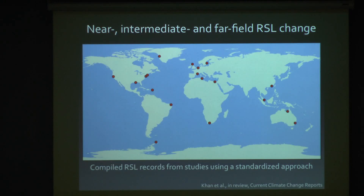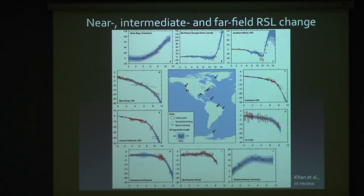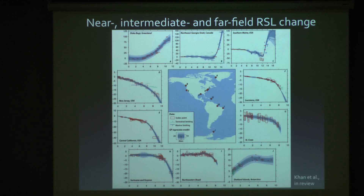We can then start to apply this standardized approach and these advancements in sea level reconstructions to global data sets. We can compare these sites because we're using a standardized approach. This comes from a review paper that I worked on earlier this summer to compile a global data set of sea level records using a similar approach. I'm going to show a subset of these sea level records from Greenland, North and South America, down to Antarctica — Greenland in A, the Northwest Georgia Strait in Canada in B, Southern Maine, and the South Shetland Islands in Antarctica. These are near-field sites, characterized by falling sea levels to present, and the magnitude and timing of these changes varies between sites related to local ice sheet histories.